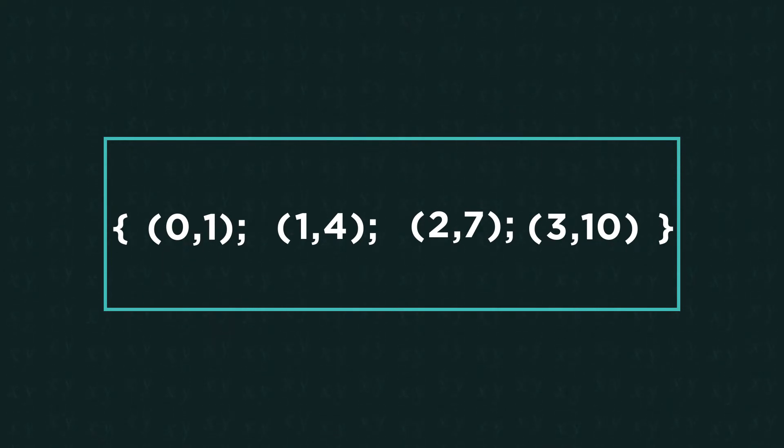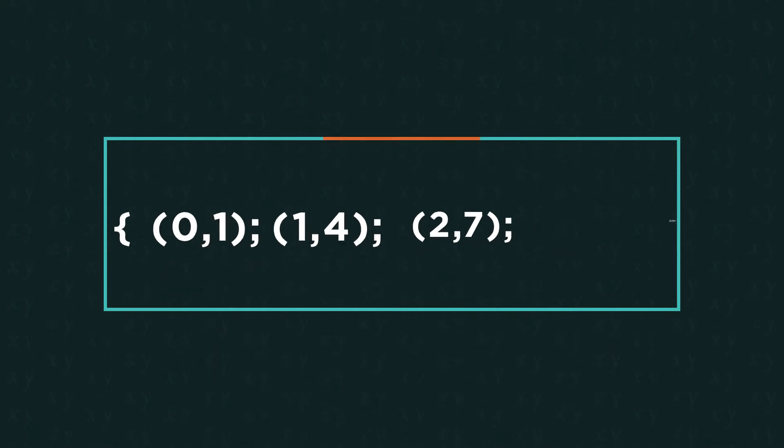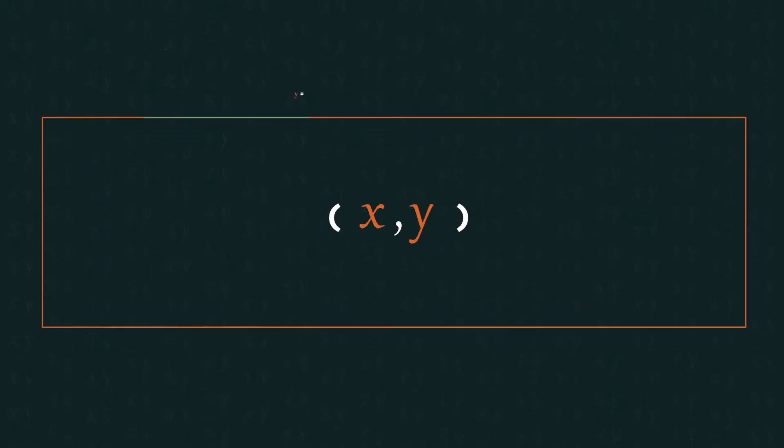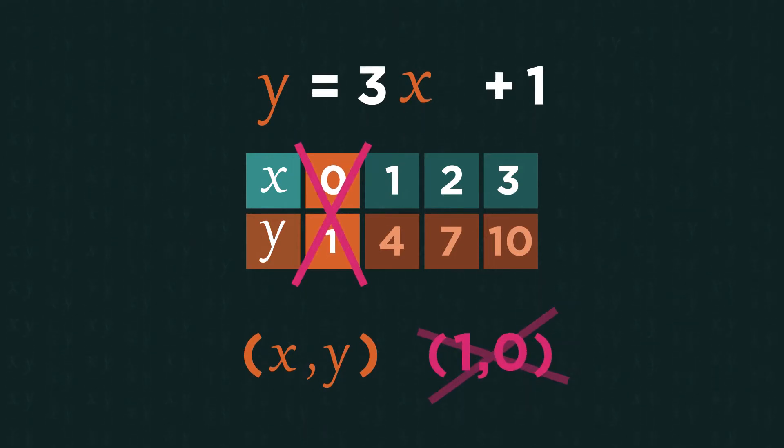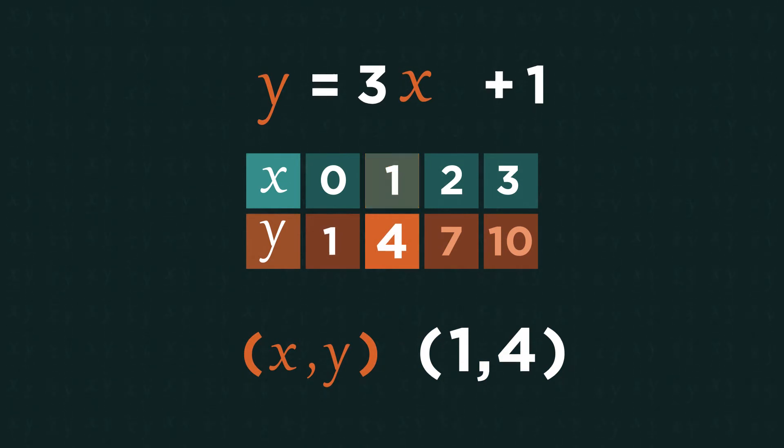It's really important that we always write the x value before the y value. So 0, 1, not 1, 0. Then 1, 4 and so on.